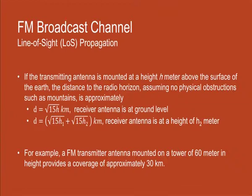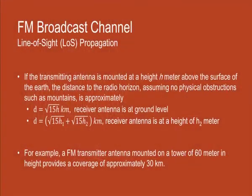The formula is: D equals the square root of 15 times H, where H is the height of the transmitting antenna measured in meters and D is the distance or range of communication measured in kilometers. This formula assumes the receiver is at ground level. If the receiver antenna also has a certain height H2, then the range is the square root of 15 times H1 plus the square root of 15 times H2, where H1 is the transmitter antenna height and H2 is the receiver antenna height.